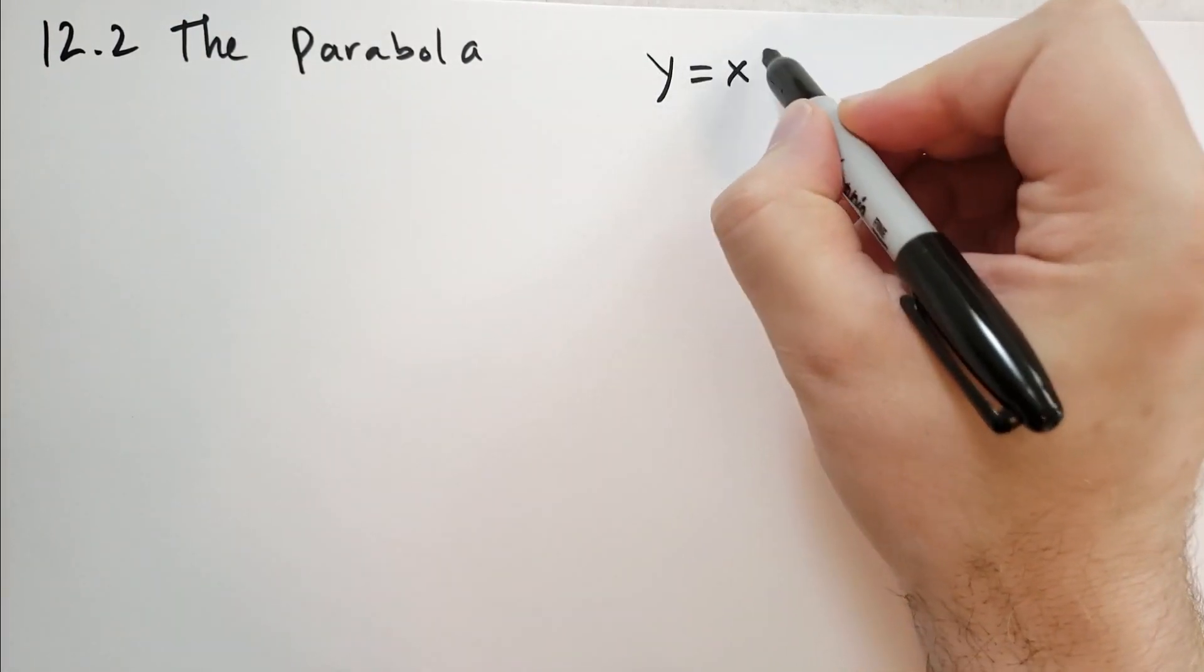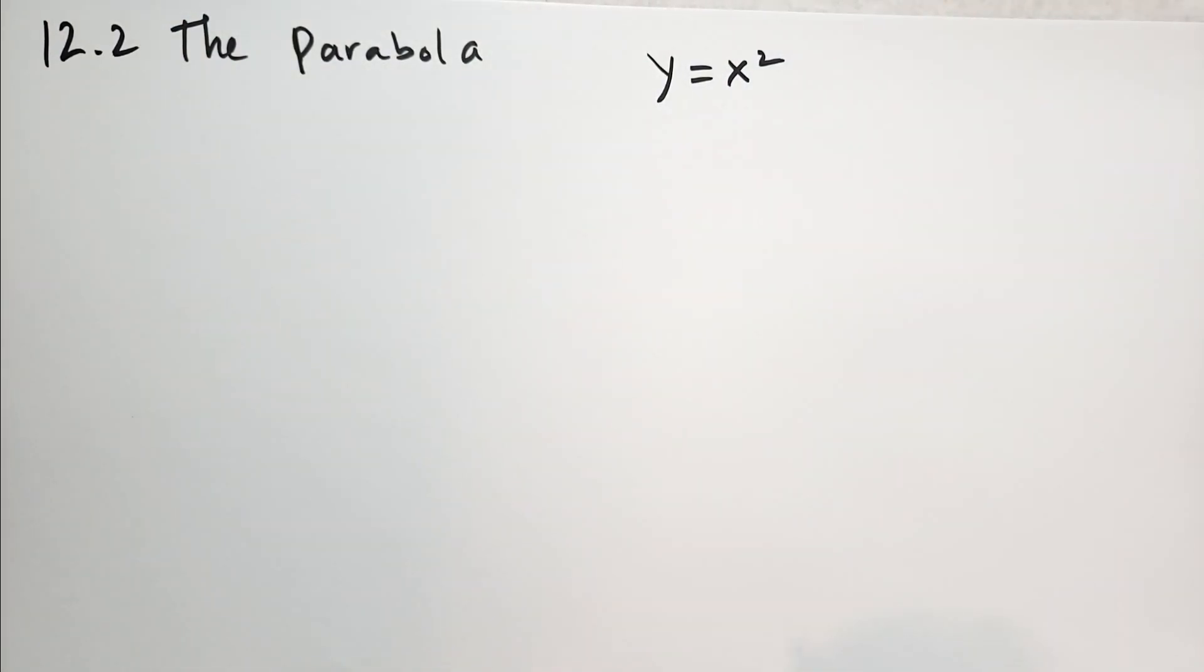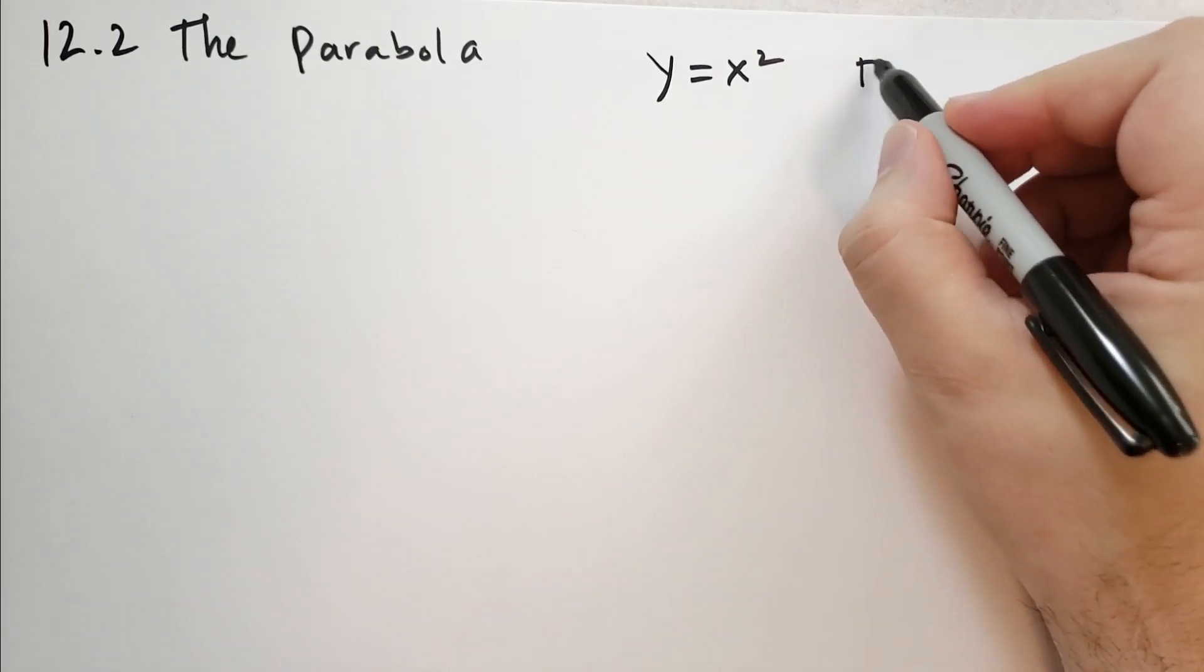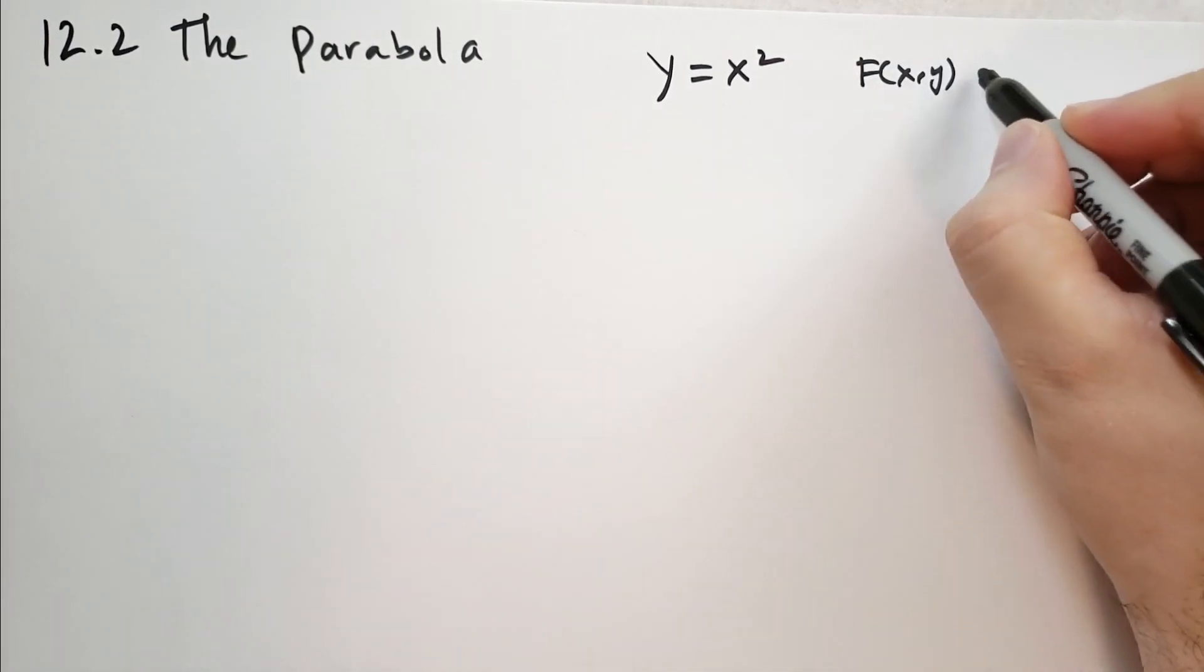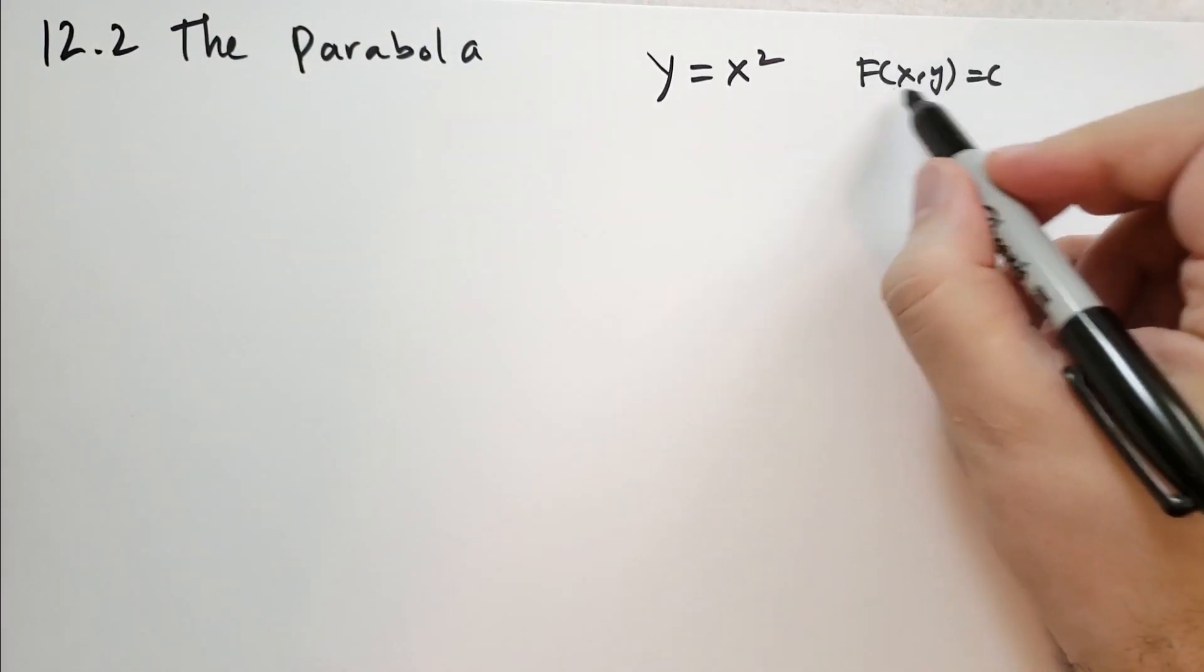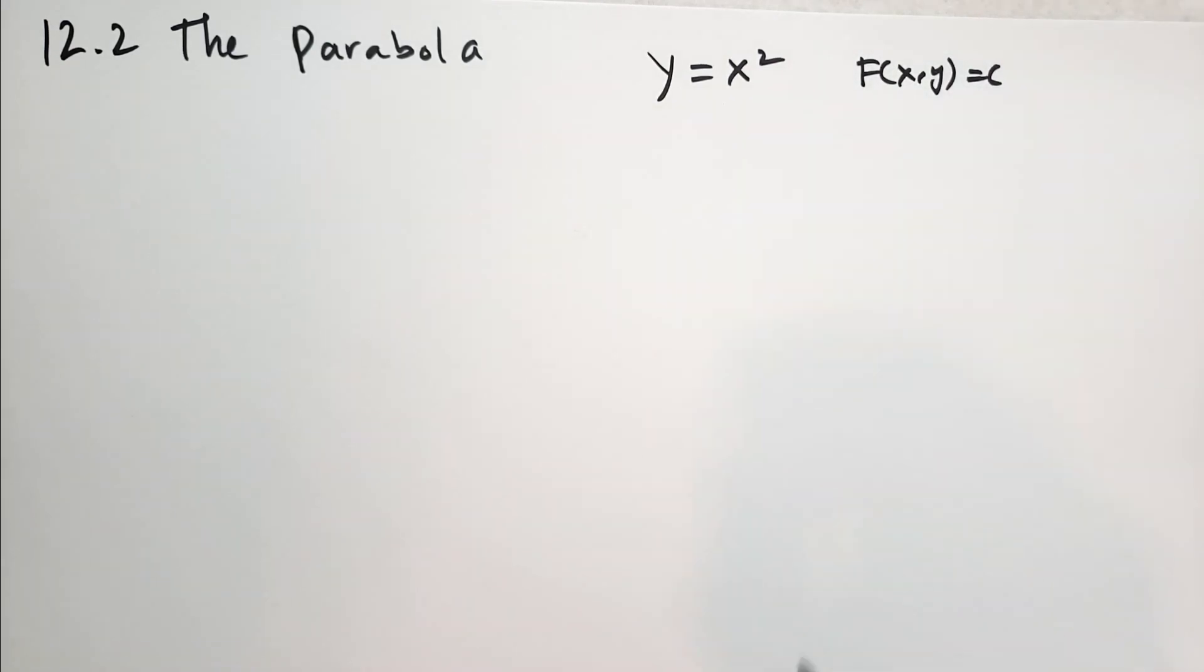The parabola arises when you have an equation of the form y equals x squared. Remember that in analytical geometry, we're trying to find how to graph expressions involving x and y without having to go through all the points and calculate them each time.